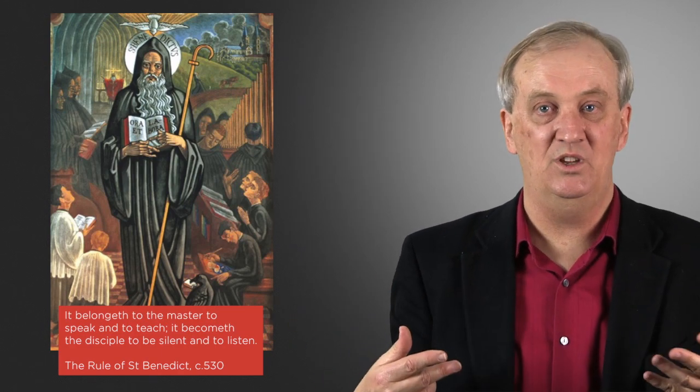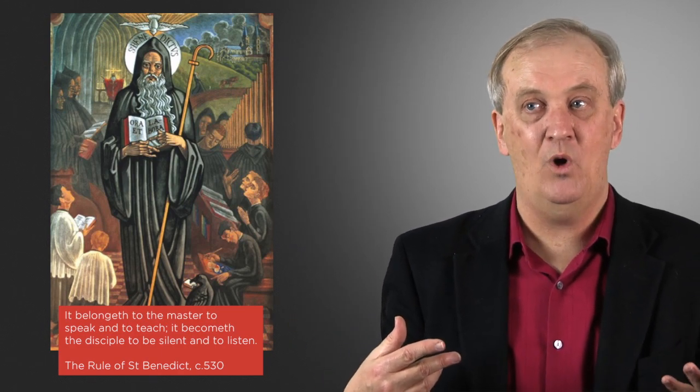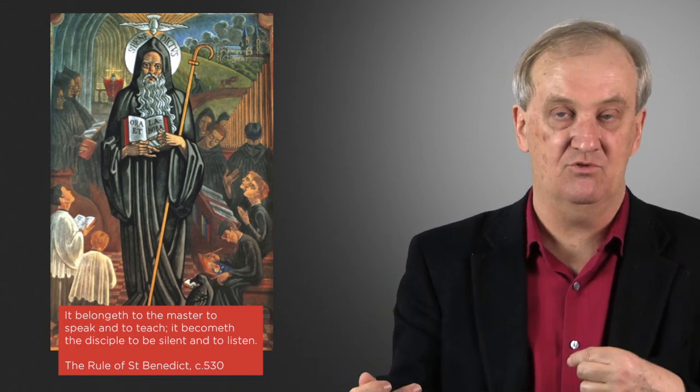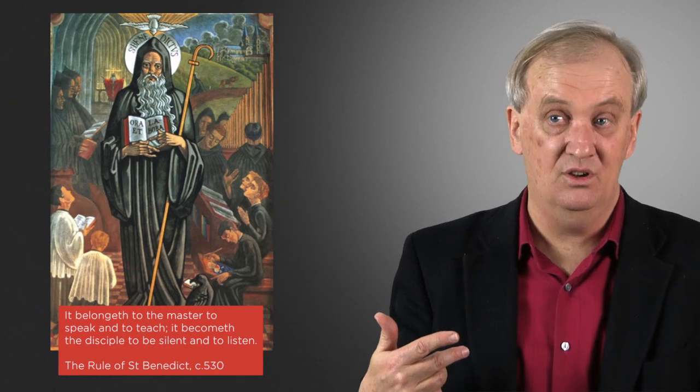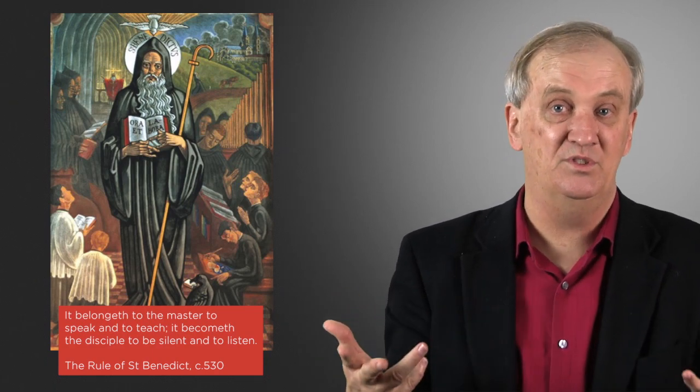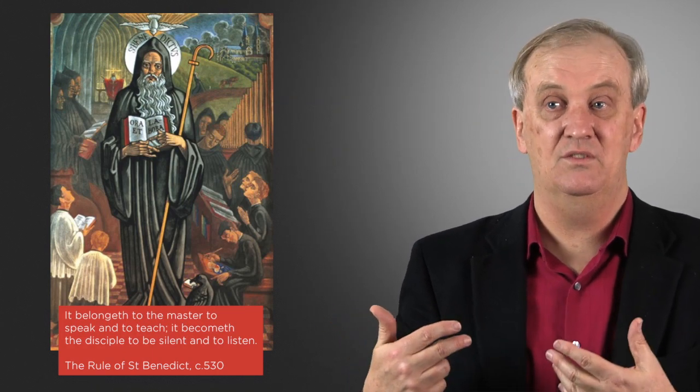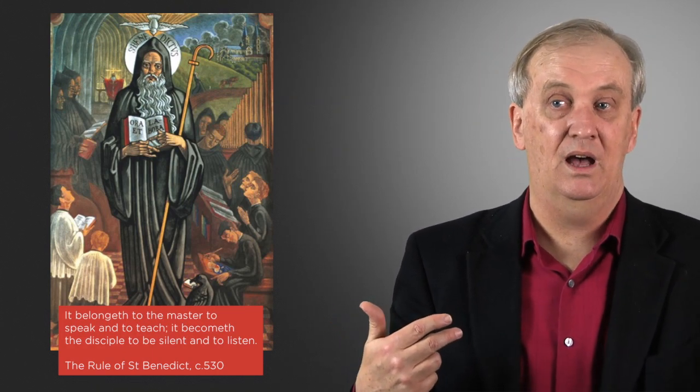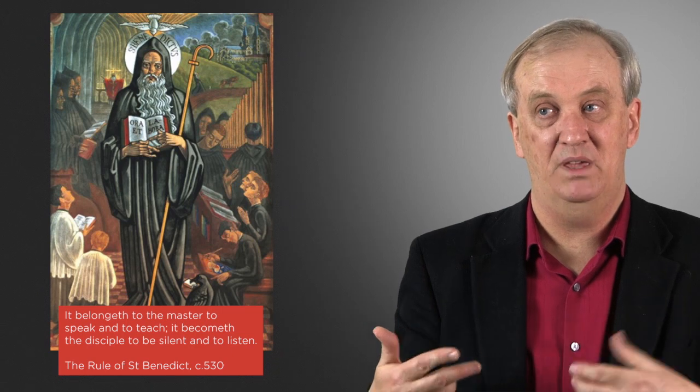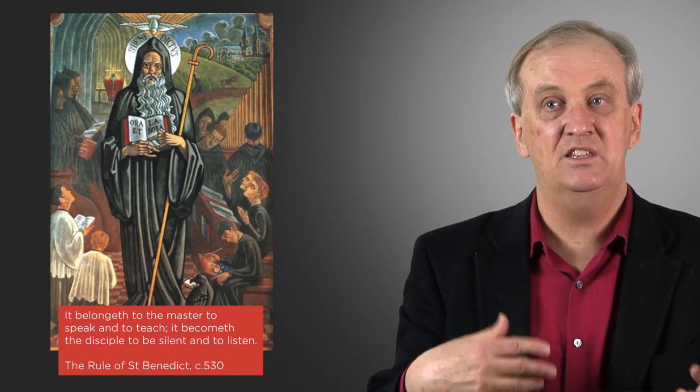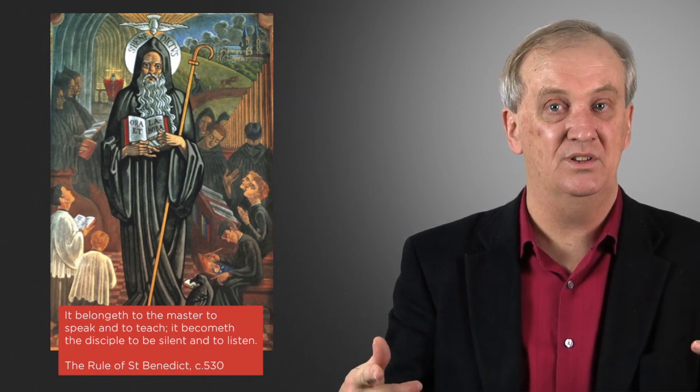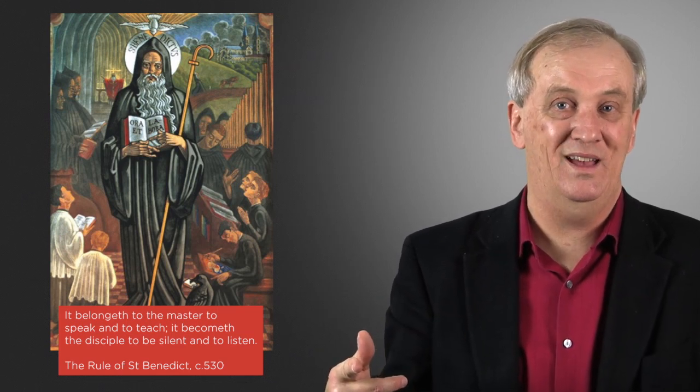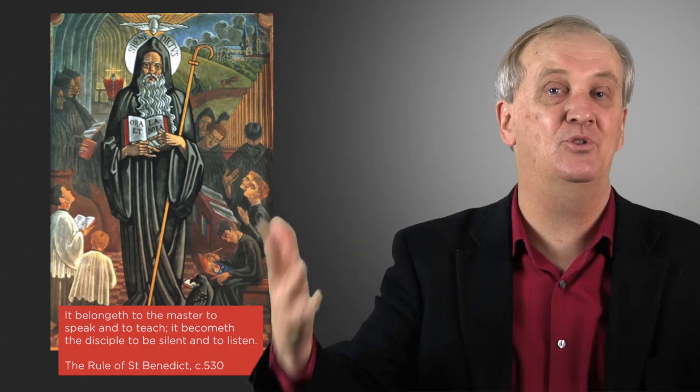So what with Western monasticism, we set up these places which build these kinds of knowledge relationships. And interestingly, it's out of Western monasticism that the universities are formed. And these become the first forms of modern education. The old universities of Europe were originally monasteries before they became universities. This is one of the classic forms. But again, the scaling issue was you had to be in a room where there was a limit to how many people could listen.